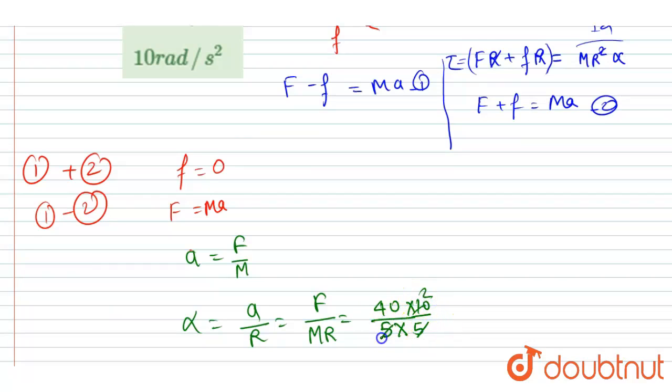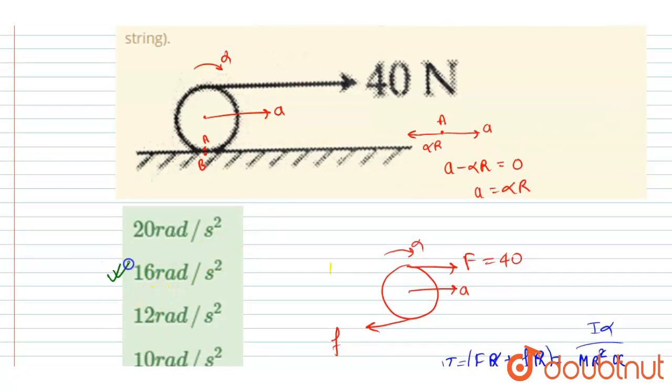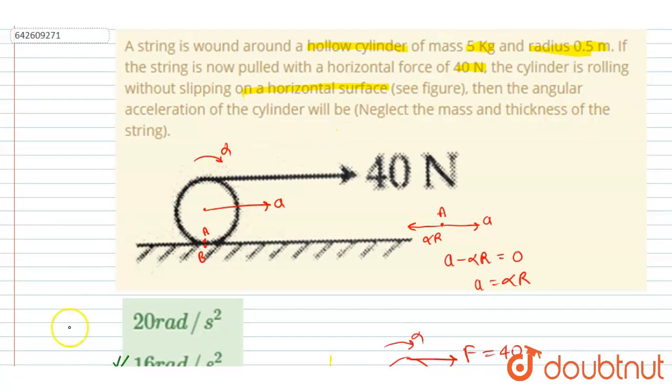So it will be 2, and this will be 8, and it is equals to 16 radian per second square. And this will be the angular acceleration. And you can see option B is 16 radian per second square. This will be the answer. Thank you.